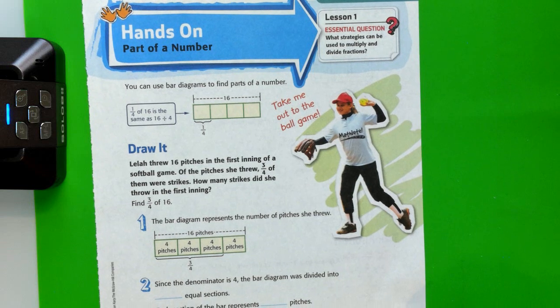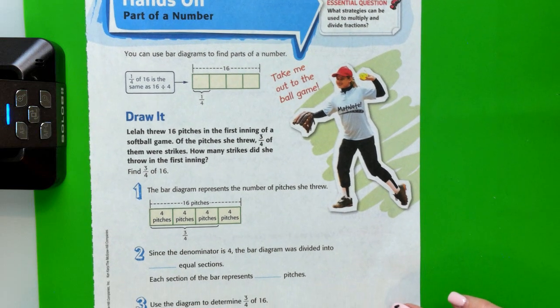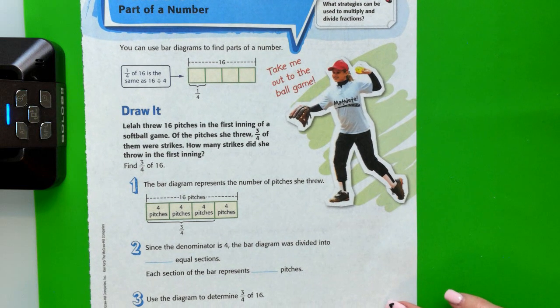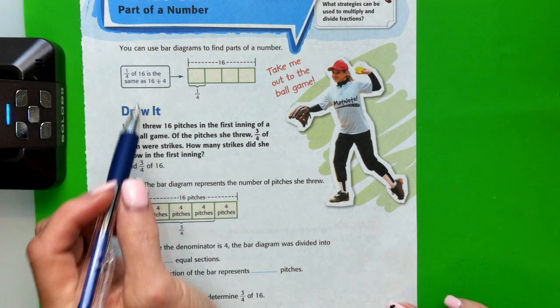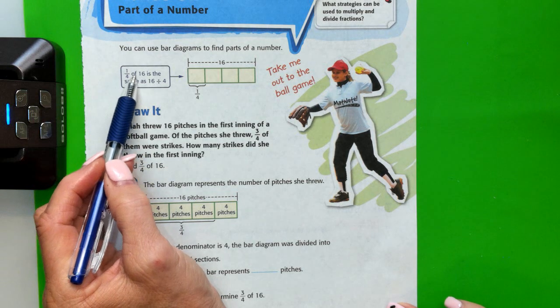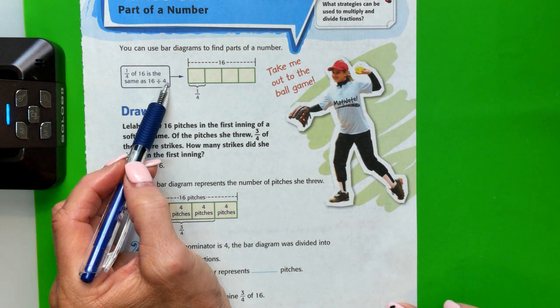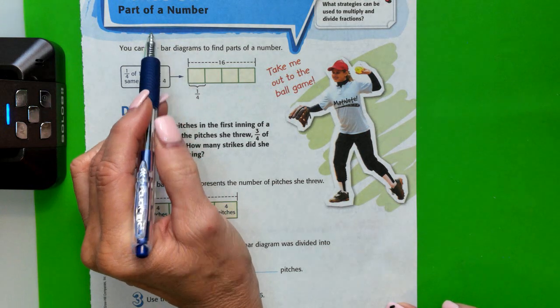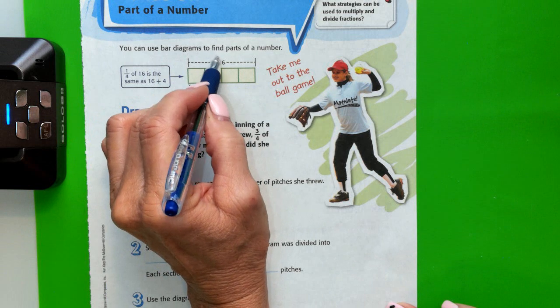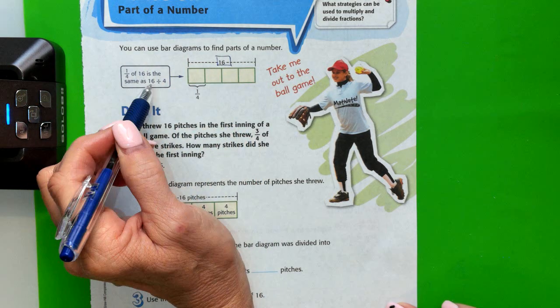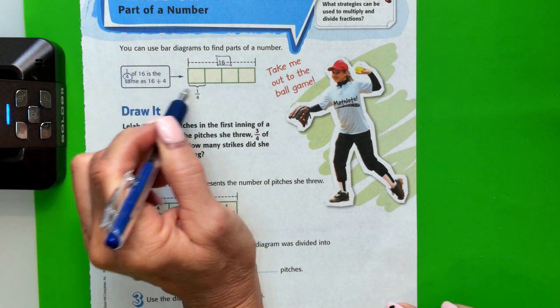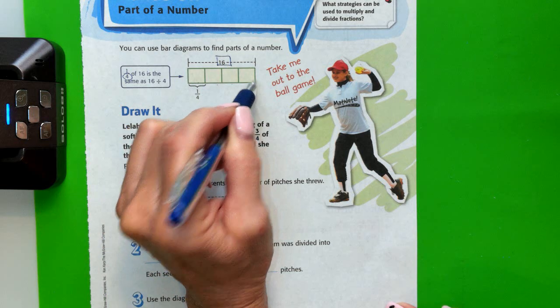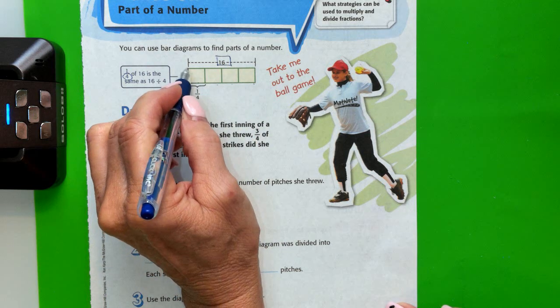We can use bar diagrams to find parts of a number. 1 fourth of 16 is the same as 16 divided by 4. So they've created a bar diagram and they've put 16 in it. And because our denominator is 4, we have to divide it into 4 equal sections, which they've done here for you.